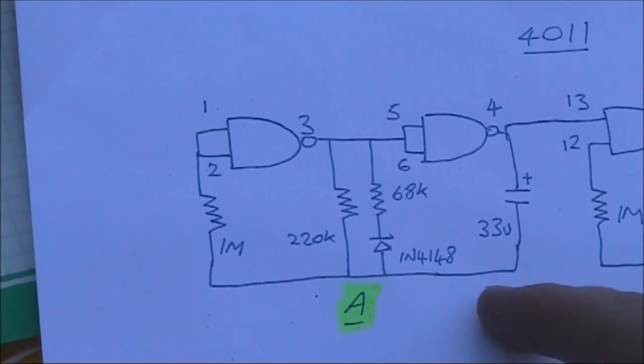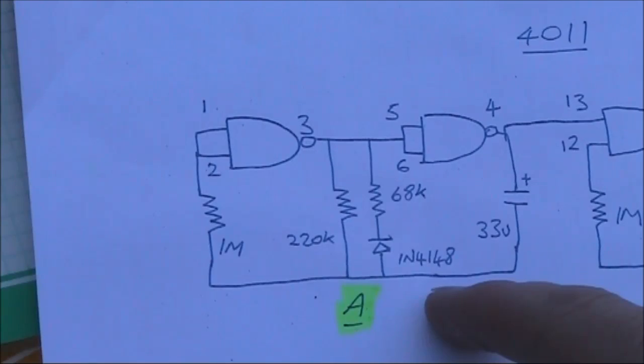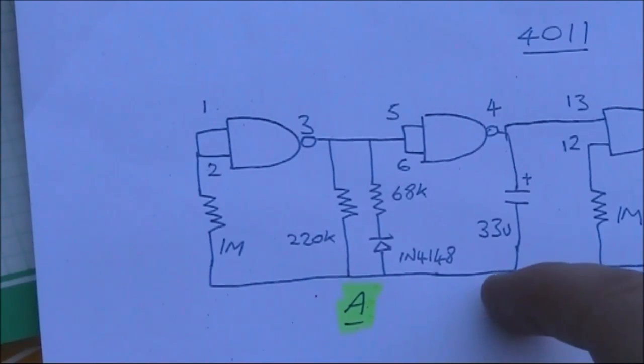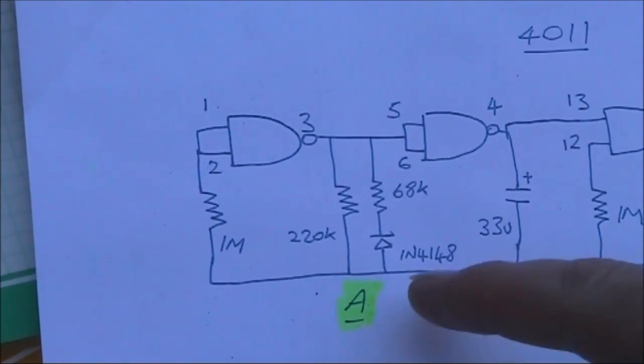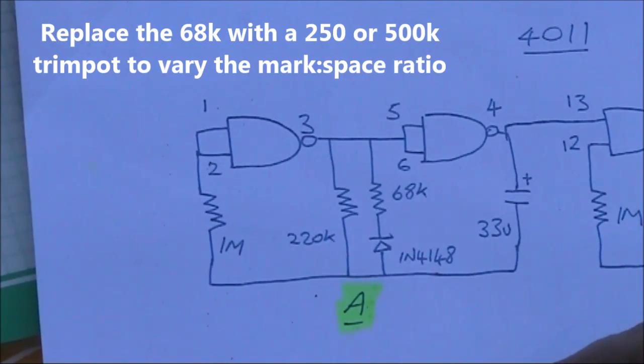Here's the on-off circuit I built. The timing elements are a 33 microfarad electrolytic capacitor and a 220k resistor. There's a calculator on a Talking Electronics website that tells you how long the cycle is with those component values. There's also the diode and the smaller value resistor, in this case 68k, and that's what makes the mark shorter relative to the space.